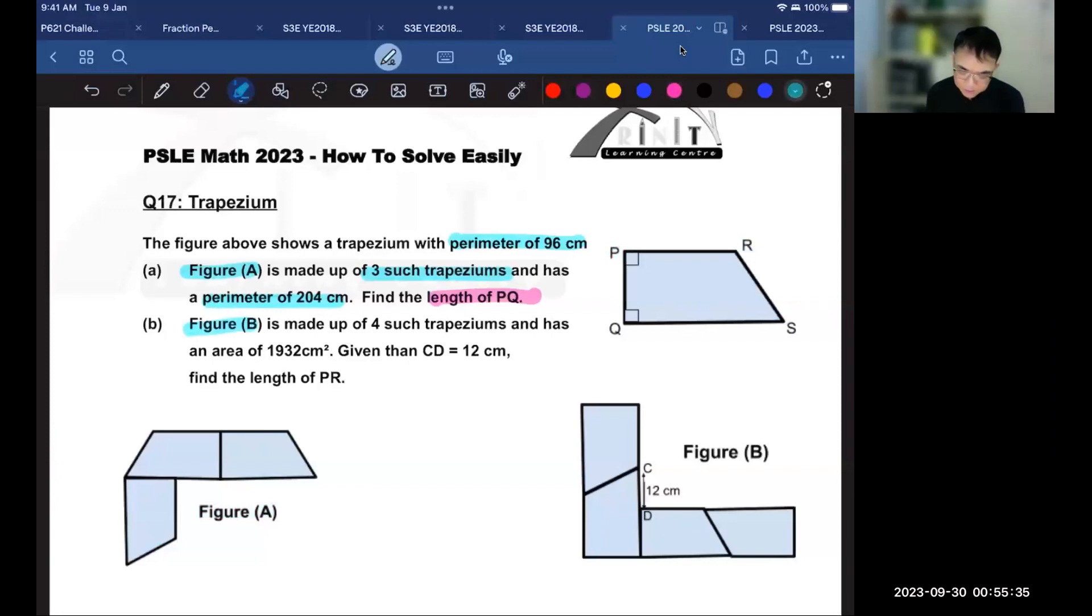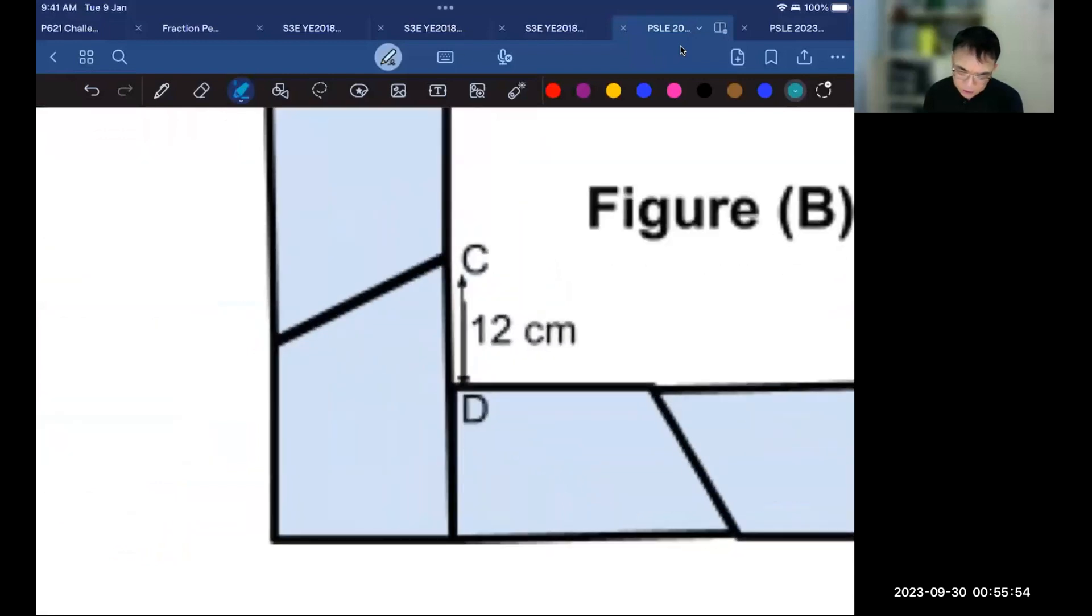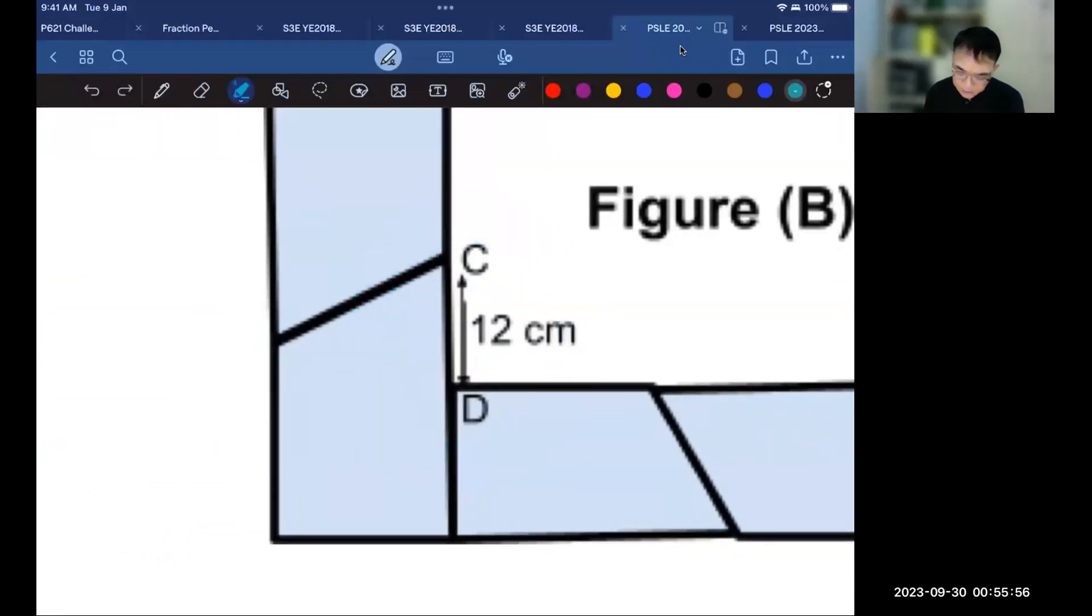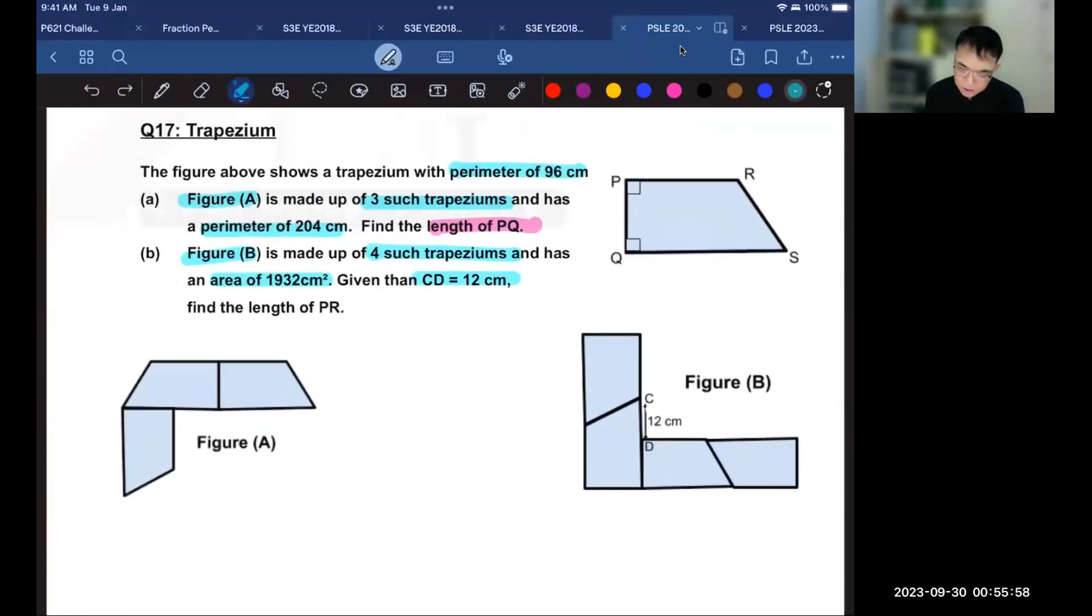In figure B, this figure is made up of four such trapeziums and has an area of 1932 square centimeters. It is given that CD is 12 cm, so CD is over here. Your question is to find the length of PR, this length.